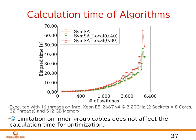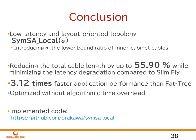We also measure the calculation time for optimization. We introduce the additional parameter sigma to regenerate the solutions, which may lead to a severe increase in calculation time. However, in our experiment, this limitation leads to negligible additional calculation time. So we can generate our proposed topology in almost the same practical time as the original symmetrical topology. In conclusion, we proposed SimSA Local supporting low latency and high scalability on cabling cost. We can reduce the total cable length drastically and significantly improve the application performance compared to the conventional regular topologies for HPC systems.